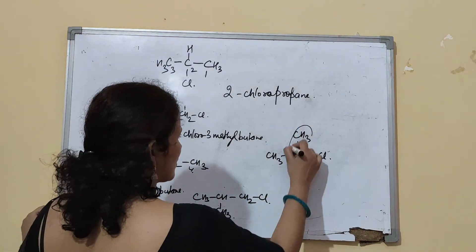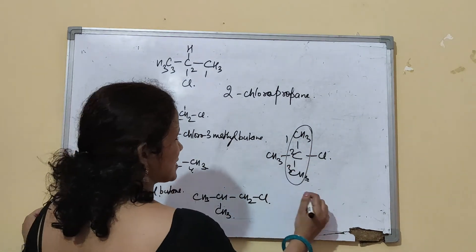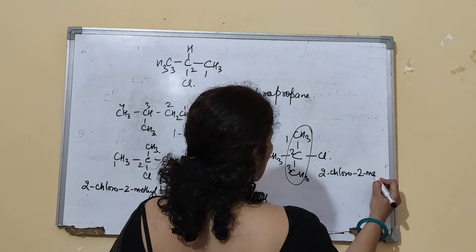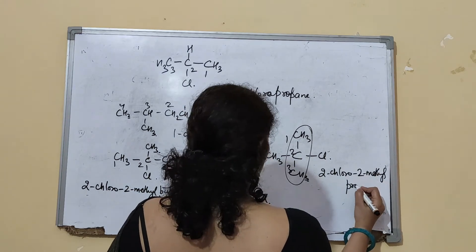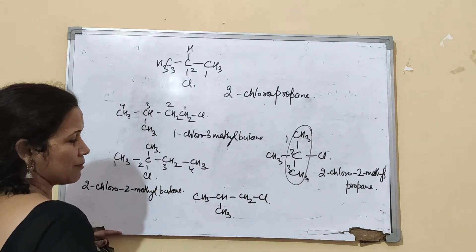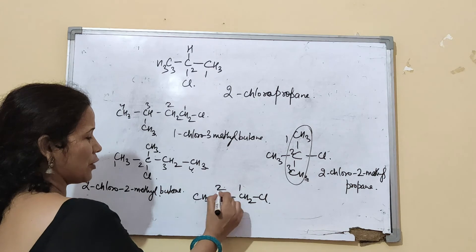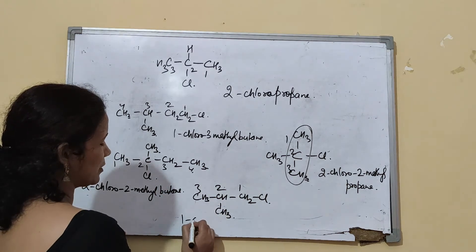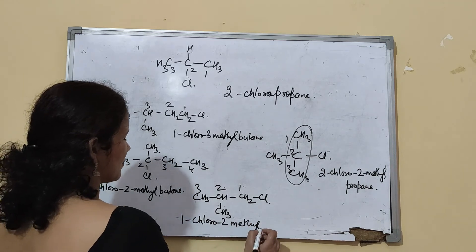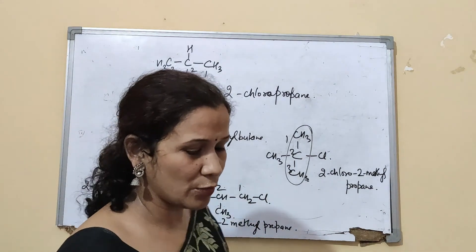For a three-carbon chain with chlorine at position 2 and a methyl group, it is 2-chloro-2-methyl-propane. The common name can be isobutyl chloride, but the IUPAC name would be 1-chloro-2-methyl-propane. I hope you know this rule — practice more nomenclature from different books and be confident about it, since there is nothing technically difficult here.